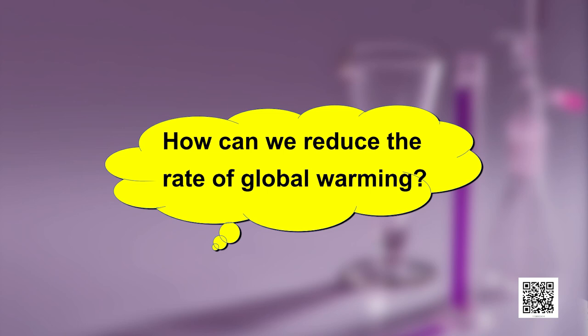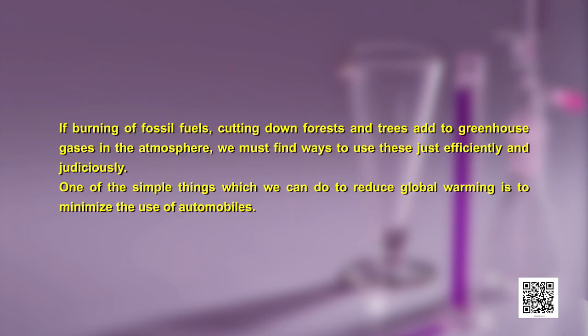How can we reduce the rate of global warming? If burning of fossil fuels and cutting down forests add to greenhouse gases, we must find ways to use them efficiently and judiciously. One simple measure is to minimize the use of automobiles — depending upon the situation, one can use a bicycle, public transport or carpooling. We should plant more trees to increase green cover, avoid burning of dry leaves and wood, and avoid smoking in public places and workplaces as it is harmful not only to the smoker but also to others.